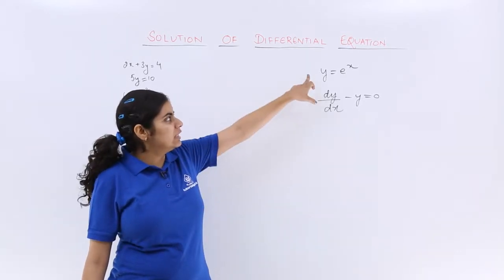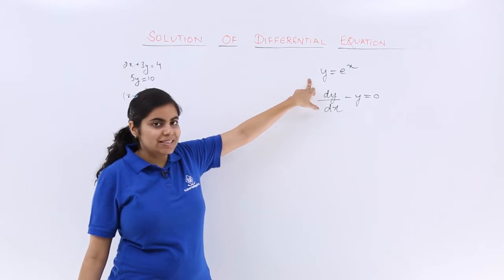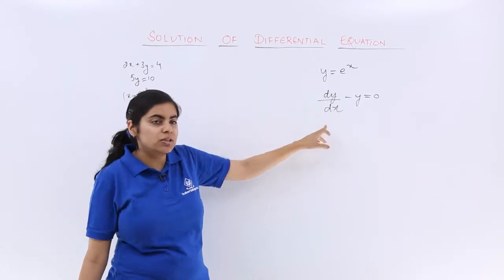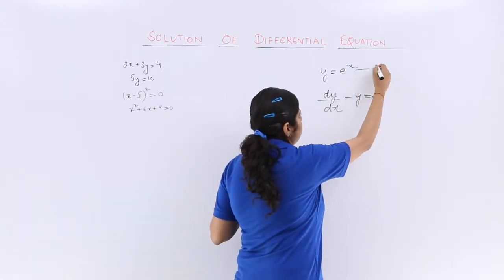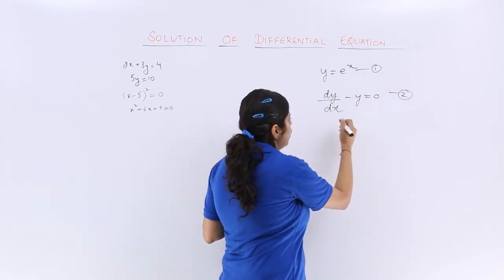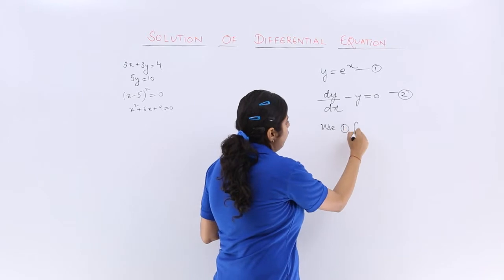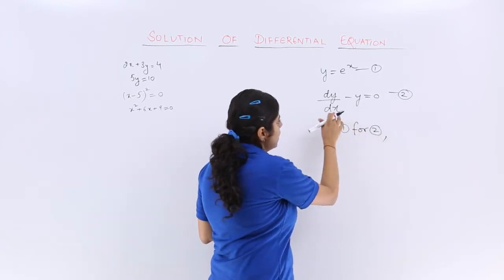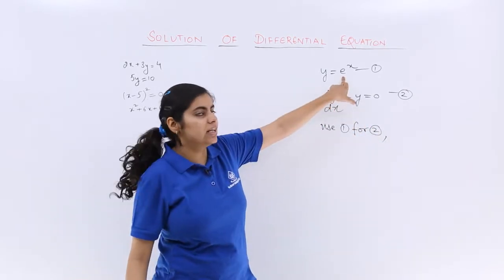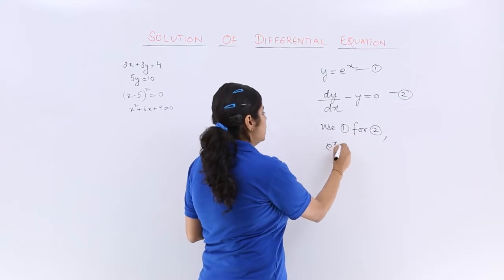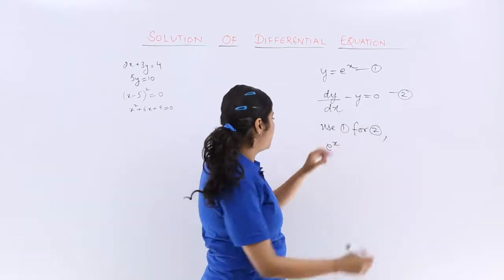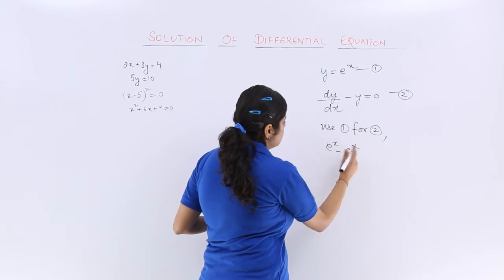If this is equation 1 and this is equation 2, you use 1 for 2. dy by dx here is e raised to the power x, differentiation of e raised to the power x, minus y. y is e raised to the power x.